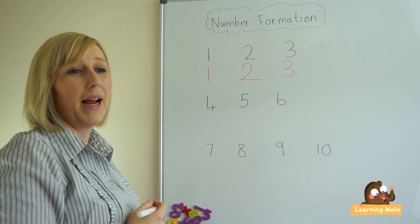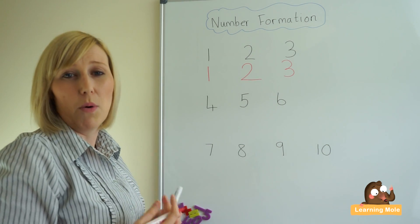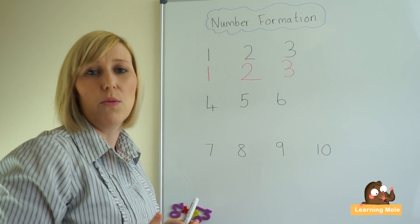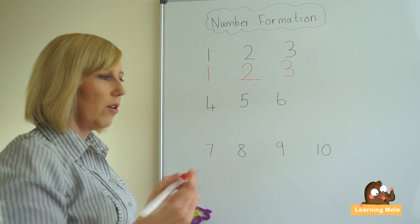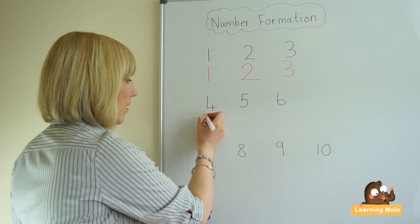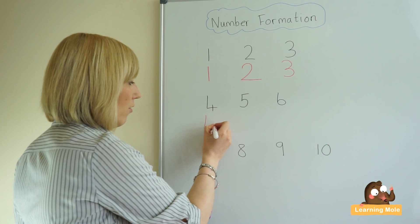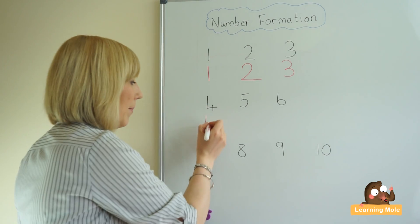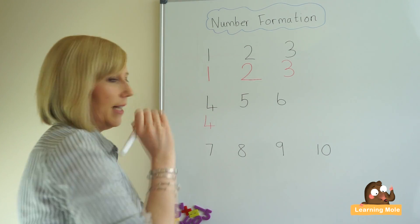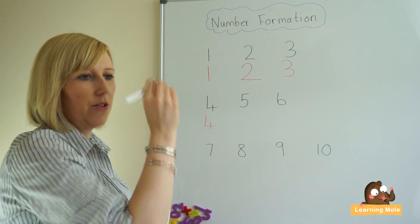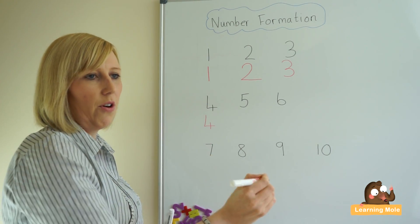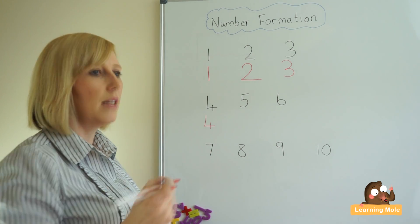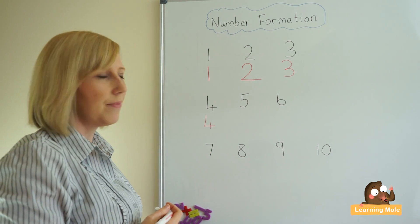Number four is one that children tend to manage quite quickly and simply. We talk about going down, across, we lift our pencil and we give it a little tail. Down, across, lift our pencil and give it a little tail.